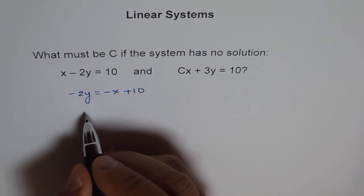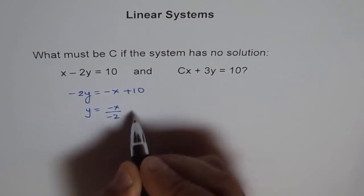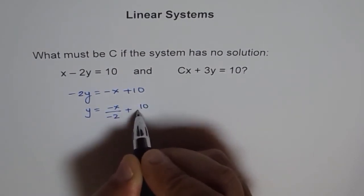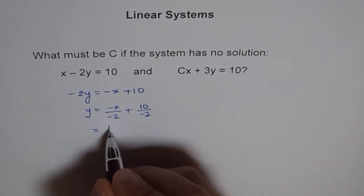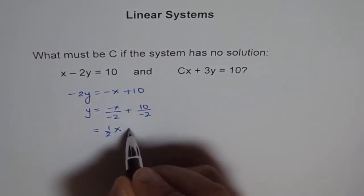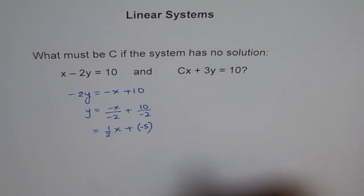Now if I divide by minus 2, I get y equals minus x over minus 2 plus 10 divided by minus 2, which gives me half x plus minus 5. So that is what I get.